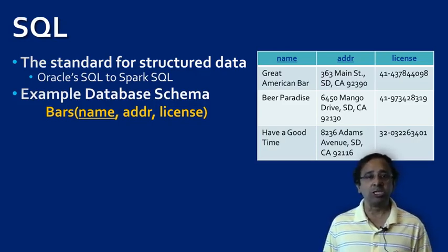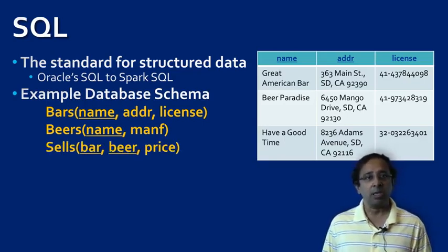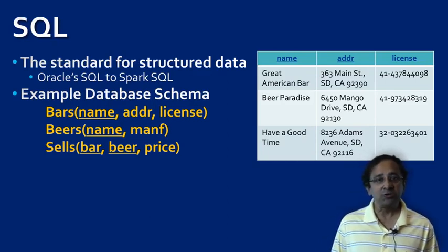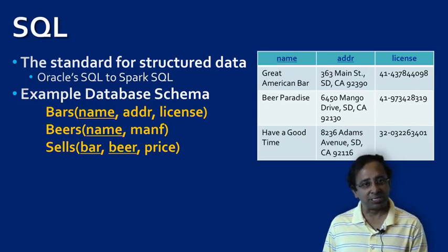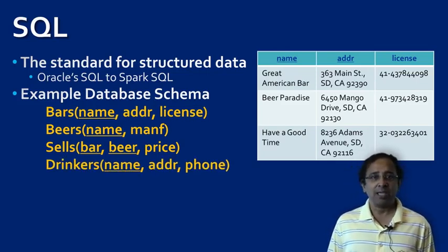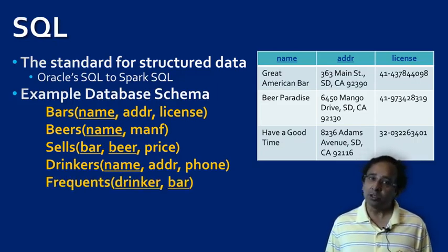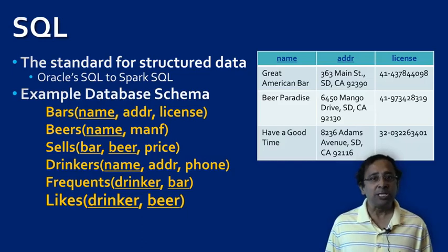We will use both representations as we go forward. The second table, called Beers, lists the names and manufacturers of beer. Not every bar sells the same brands of beer, and even when they do, they may have different prices for the same product because of differences in establishment costs. So the Sells table records which bar sells which beer at what price. Our business also keeps information about regular member customers. The Drinkers relation has the name, address, and phone of these customers. It also knows which member visits which bars and which beer each member likes. Clearly, the Beer Drinkers Club knows its customers.